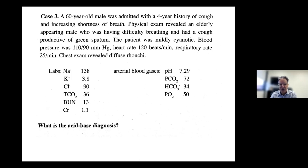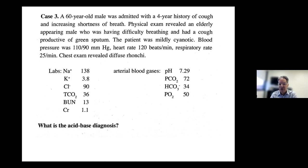The pCO2 is elevated at 70, so dissolved CO2 = 0.03 × 70 ≈ 2.1 mmol/L above the bicarbonate, which gives you the total CO2 of 36. That's why there's about a 2-unit difference here, compared to patients with a pCO2 in the 20s where total CO2 and bicarbonate are even closer together.